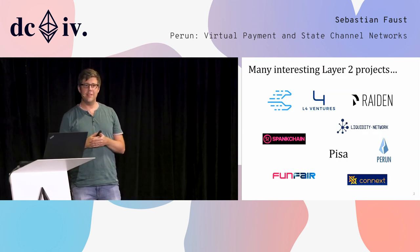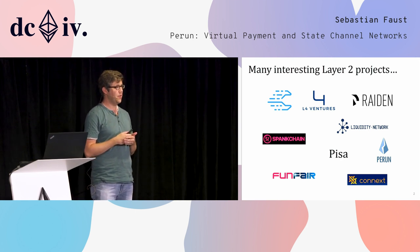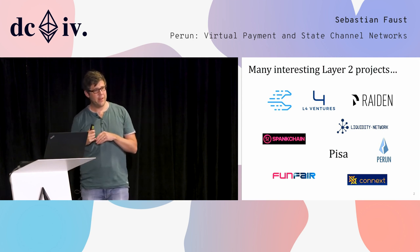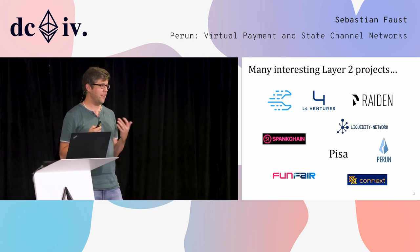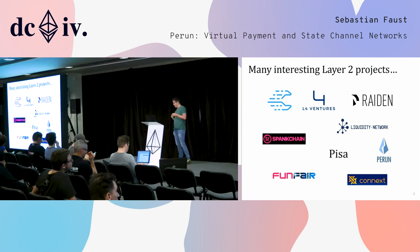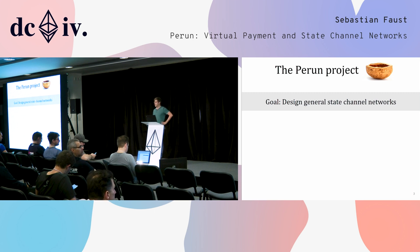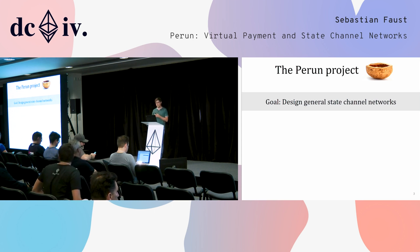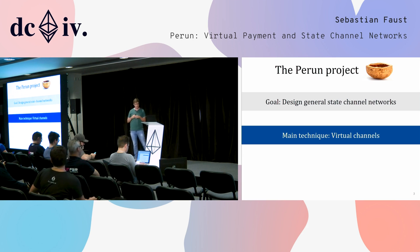As you have seen already today in several talks, there are many exciting projects currently going on. People do a lot of research and development in building different types of state channel and payment channel networks. I would like to explain at a high level what we do in Perun. In Perun, the goal is similar to the previous two talks — we are trying to build generalized state channel networks. The main technique that we developed is about virtual channels.